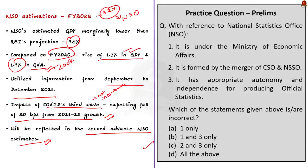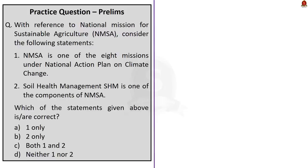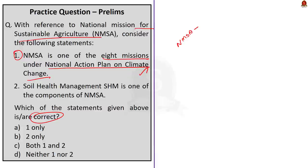With this, let us come to the article discussion session and take up the practice prelims questions. The first question is about the National Mission for Sustainable Agriculture with two statements to evaluate. Statement 1: National Mission for Sustainable Agriculture is one of the eight missions under the National Action Plan on Climate Change — this statement is correct, as the National Mission on Sustainable Agriculture derives its mandate from the sustainable agriculture mission, one of eight missions outlined under NAPCC.